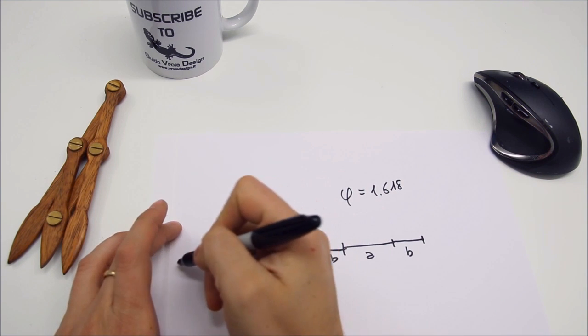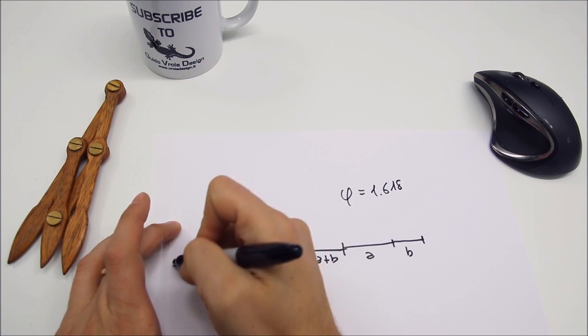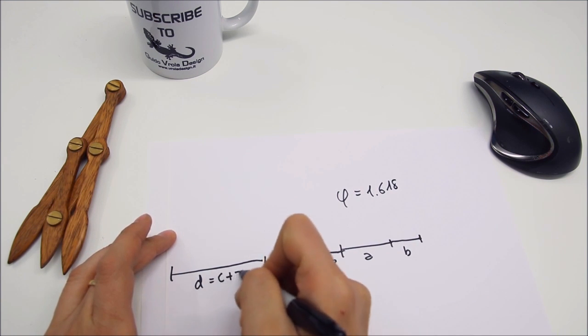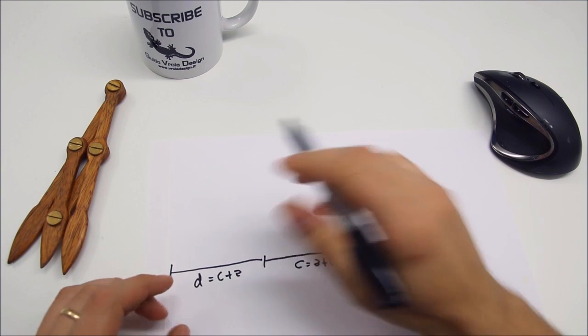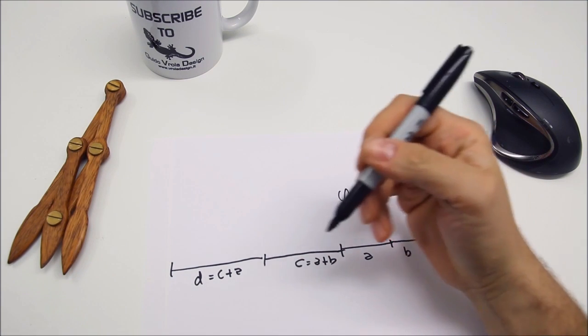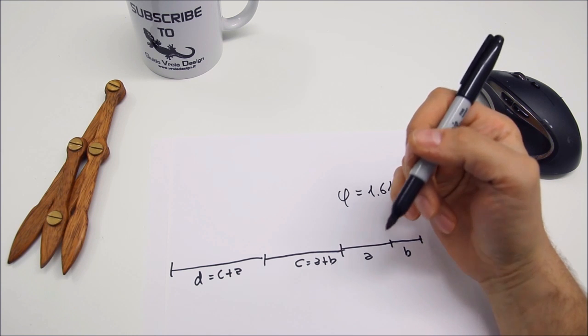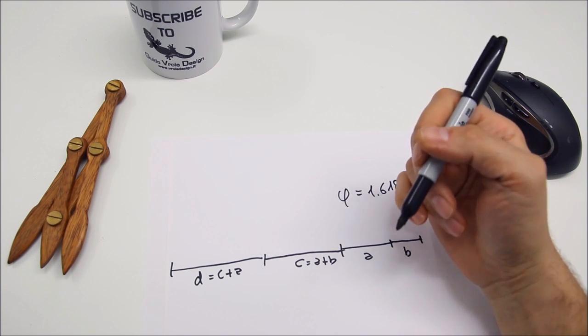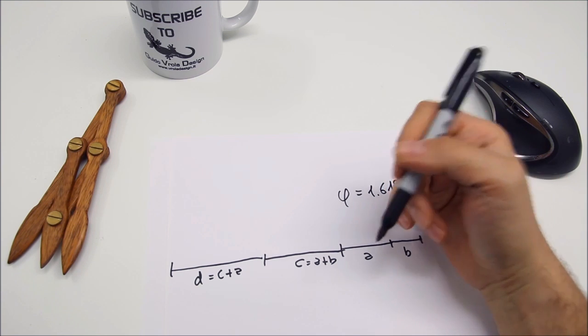So here we can draw a segment D that is C plus A and so on forever. This infinite sequence of lengths is called Fibonacci sequence by the name of his father, the Italian mathematician Leonardo Fibonacci.